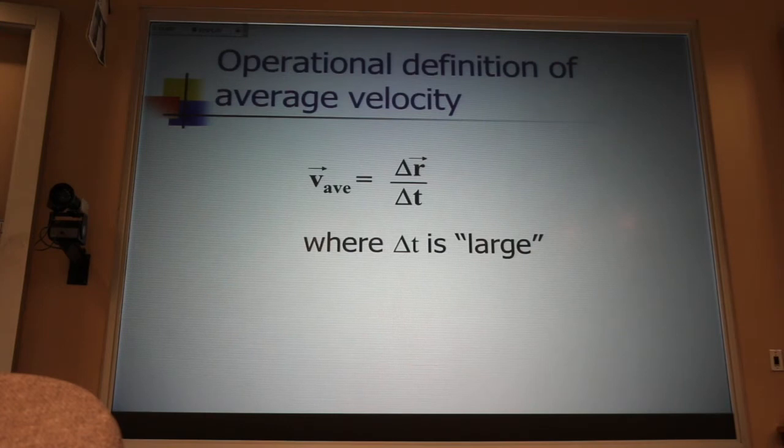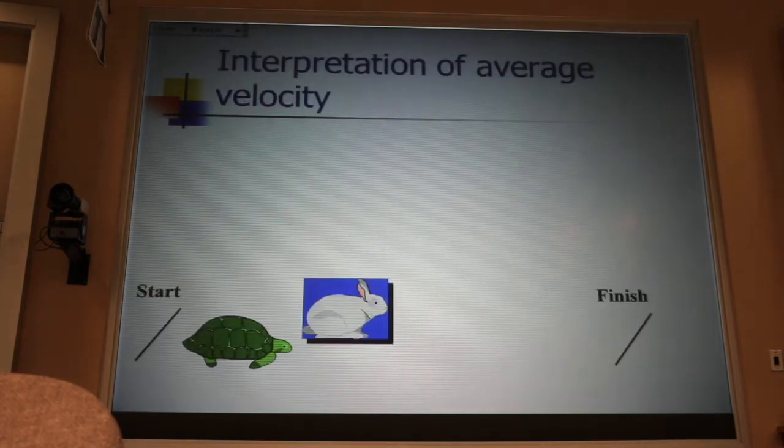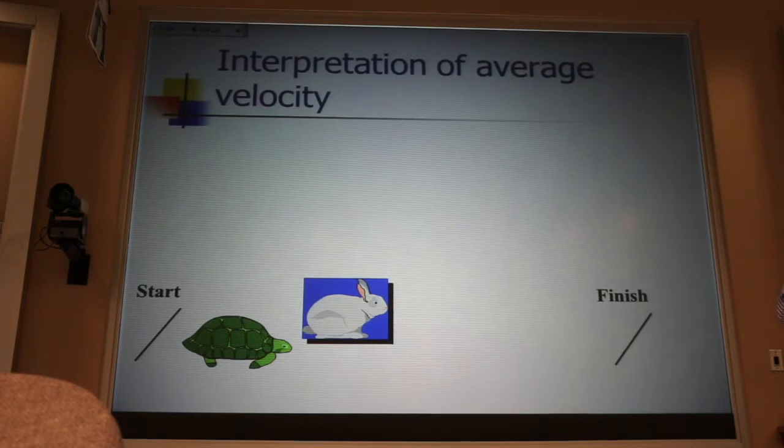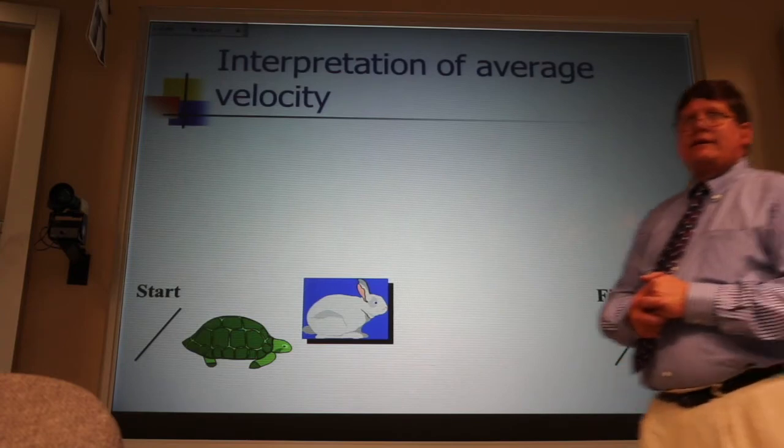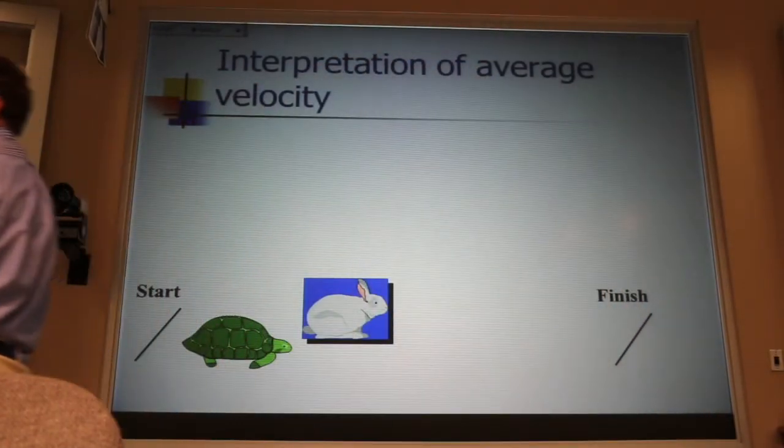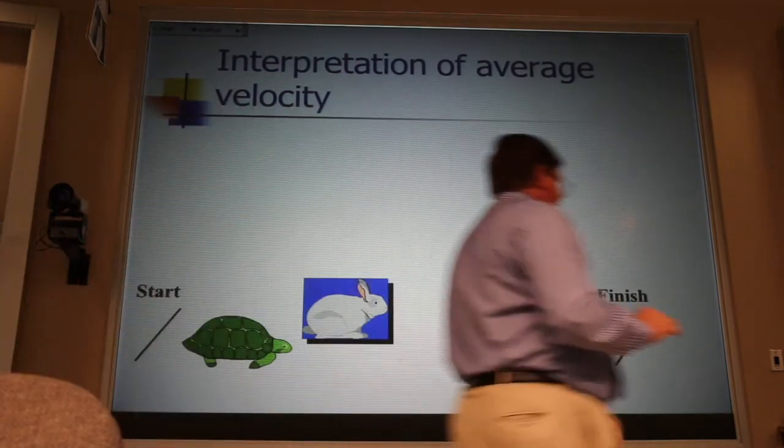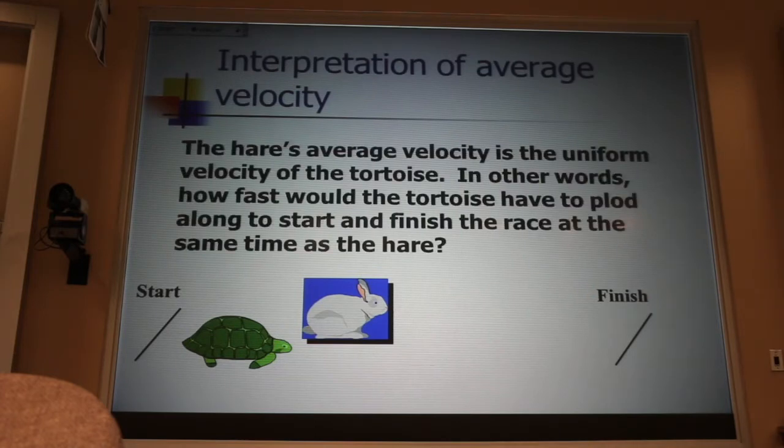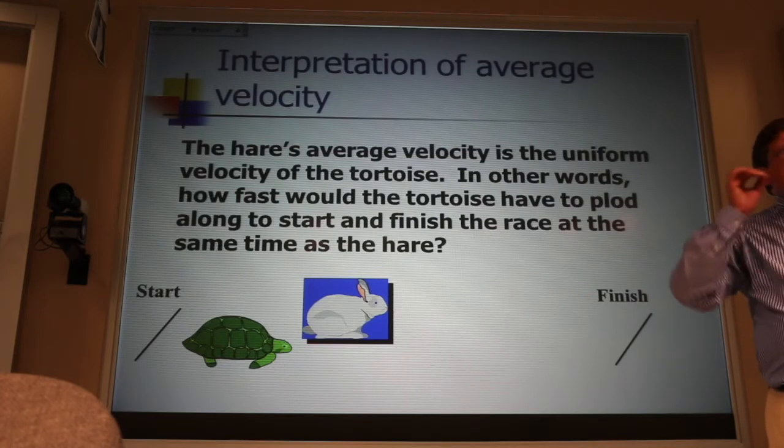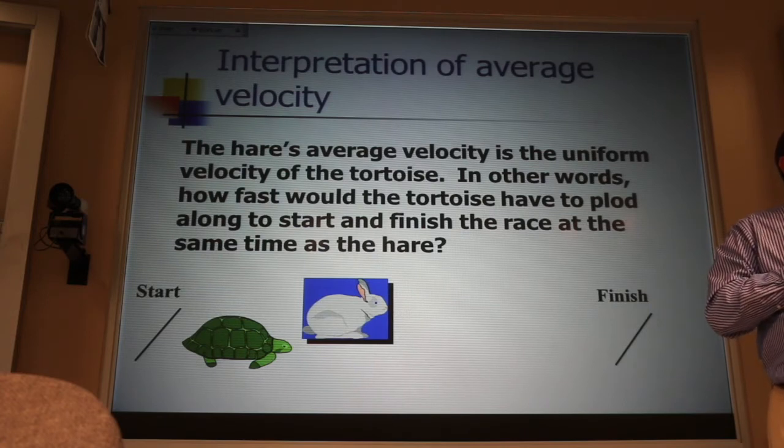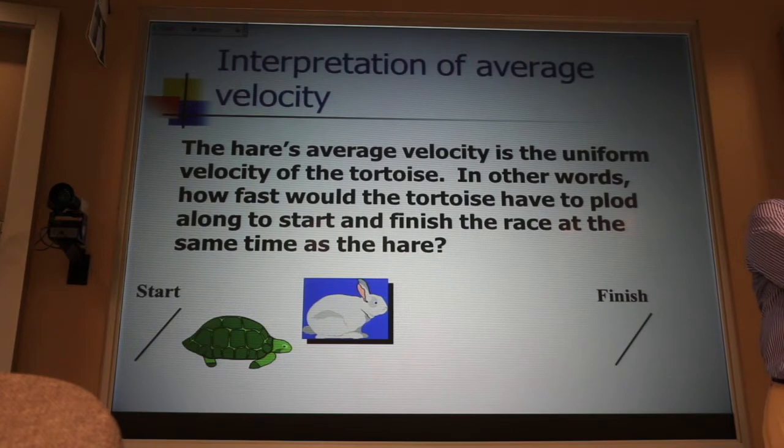Now, I like to think of average velocity in terms of this Aesop's fable. You remember the story where the turtle and the bunny rabbit are having a race. The bunny rabbit's so much faster, gets way out in the lead, decides to take a nap. When the bunny wakes up, she sees that the turtle's just about to cross the finish line, so she speeds across, and they have a photo finish. What that means is that the average velocity of the bunny rabbit is the same as the uniform velocity of the tortoise. They both start and finish the race at the same time. They both cover the same displacement in the same amount of time.